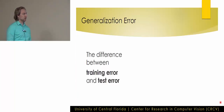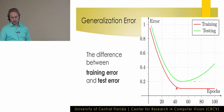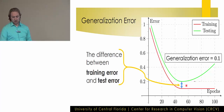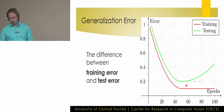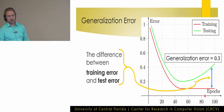Generalization error is defined as the difference between training error and test error. If we plot it, the training error is marked by the red curve and the testing error is marked by the green curve. This distance between them is the generalization error at a given point in training. As training continues, the generalization error grows — from 0.1 to 0.2 to 0.3 — indicating the model is likely overfitting.